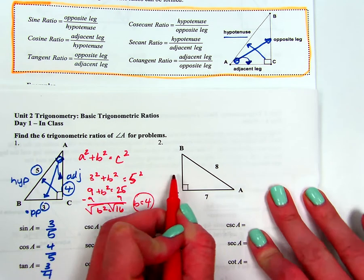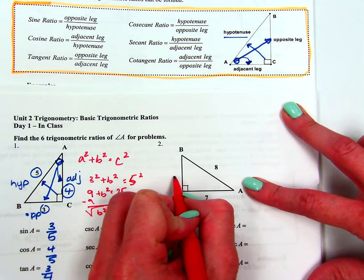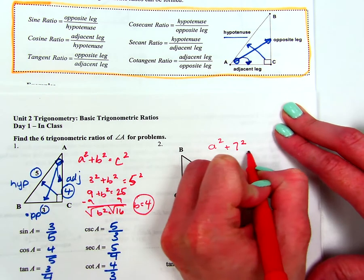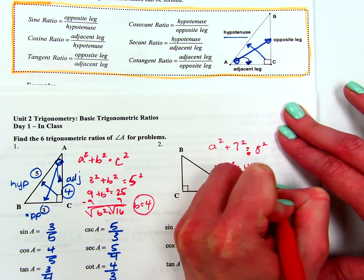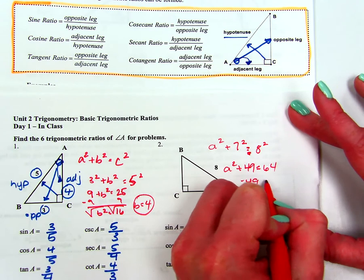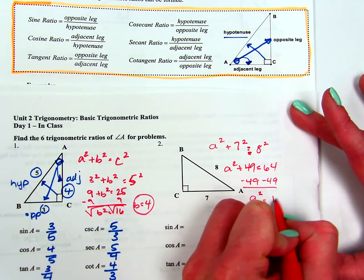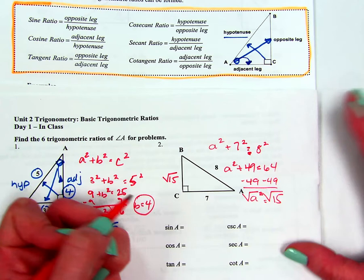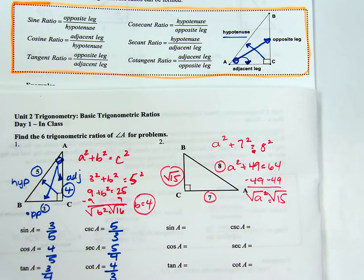For problem 2, the first thing you want to do is solve for your missing side. We have one side of 7, we're missing another side, and then we have our hypotenuse. So A squared plus B squared equals C squared: A squared plus 7 squared equals 8 squared — that's A squared plus 49 equals 64. So A squared equals 15, and taking the square root, that's the square root of 15. Our missing side is √15. I'm going to circle my three sides and plug those into the ratios just like we did on problem 1. You can pause the video and try those on your own, or follow along with me.